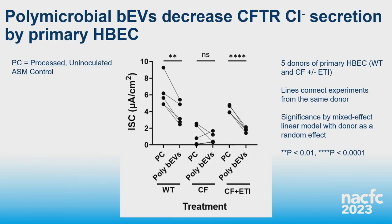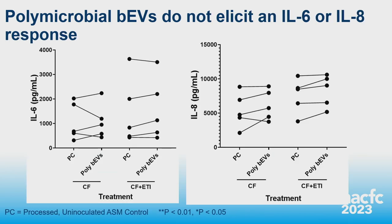The HBECs we use are primary cells that secrete mucus, making them an ideal model for the CF lung environment. We measured cell cytotoxicity by lactate dehydrogenase release at 490 nm and found no significant difference in cytotoxicity between our polymicrobial BEVs and the process control — uninoculated media put through the same vesicle isolation process — in both CF cells and CF cells treated with ETI. We then asked whether these BEVs affect CFTR chloride secretion by HBECs and found they do decrease chloride secretion in both wild-type and CF cells treated with ETI, assessed by short circuit current using Ussing chambers.